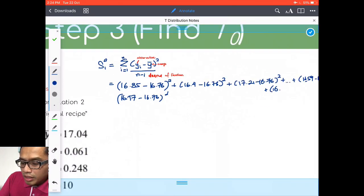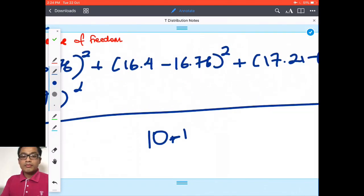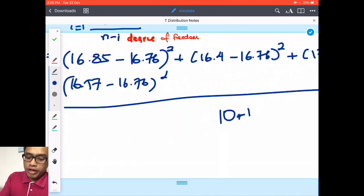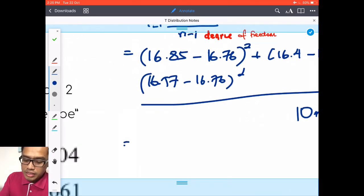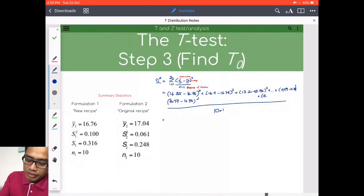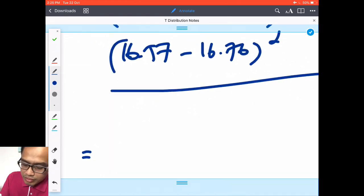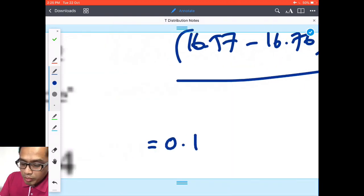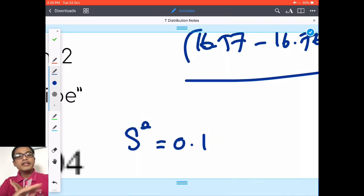This whole thing divided by 10 samples minus one. And you will have your s squared, which is 0.1. Now I'm going to write here s squared. I didn't square root it. If you want to square root it, you have that number there, more or less.